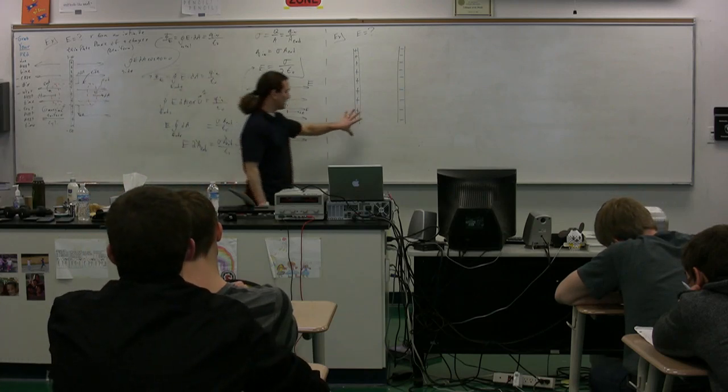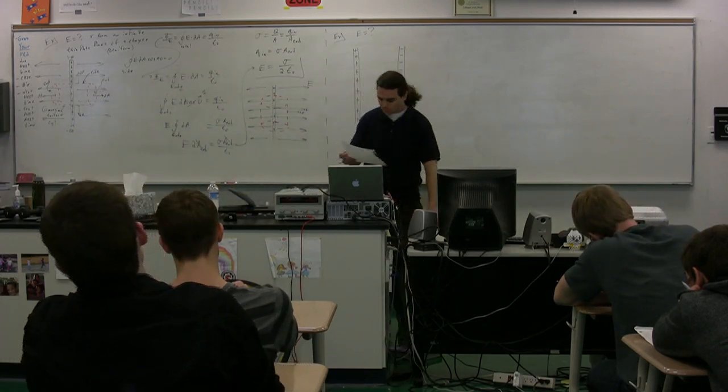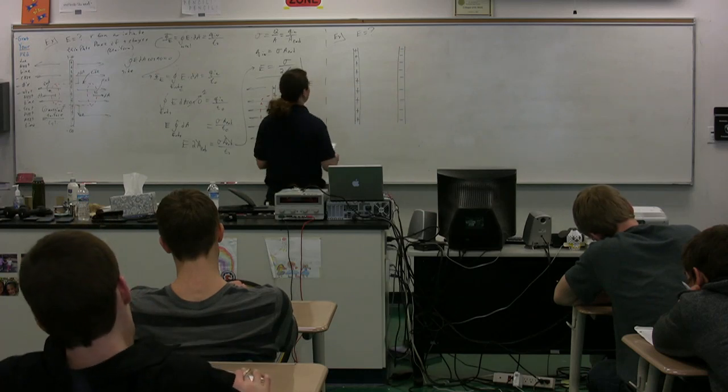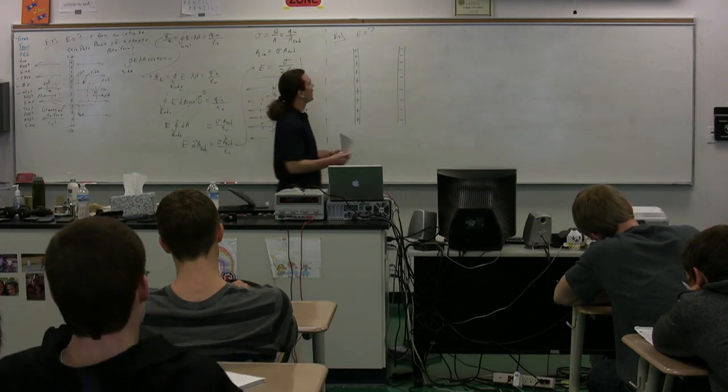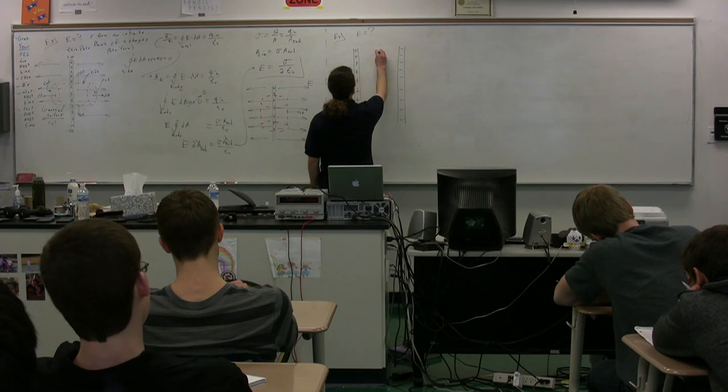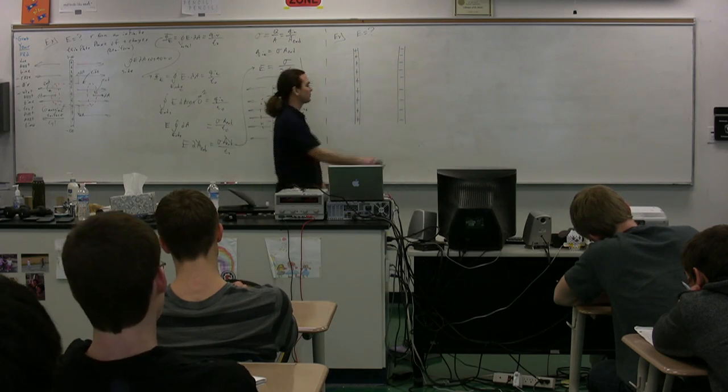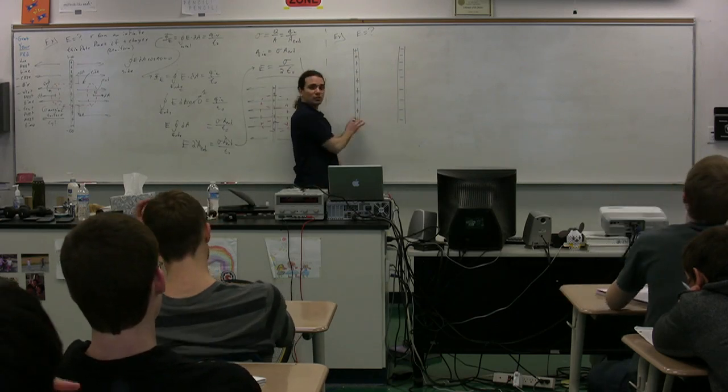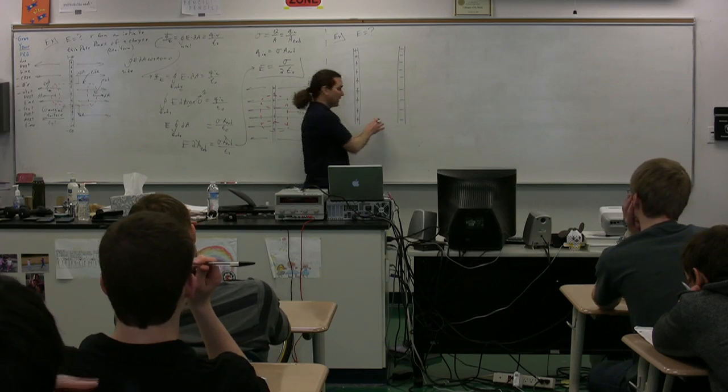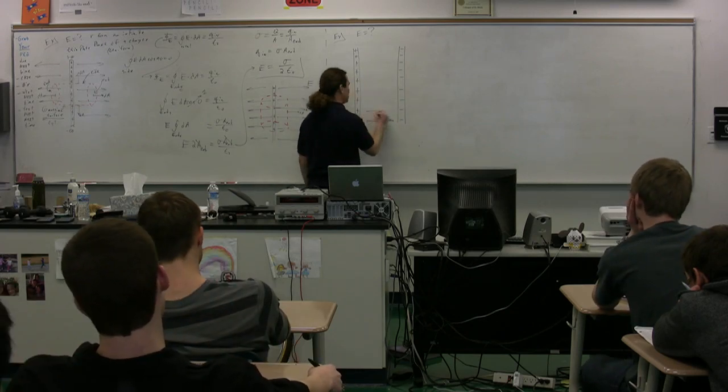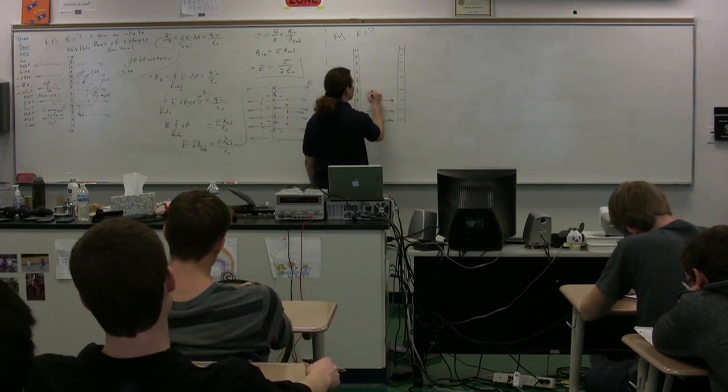So let's just look, for example, at the positive plate. We know the electric field from the positive plate located between the two will point in the direction of the electric field right here due to the positive plate. It's going to be to the right. So this is the electric field due to the positive plate.